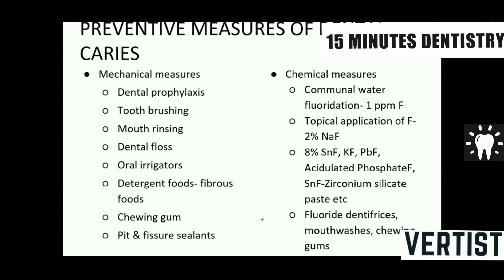Dental caries can be prevented through mechanical, chemical, and nutritional measures. Mechanical measures include regular dental prophylaxis, pit and fissure sealants, proper toothbrushing, rinsing, and flossing. Chemical measures include communal water fluoridation — the most important — and in the dental office, topical fluoride application using sodium fluoride, stannous fluoride, or acid-related phosphate fluoride, or advising patients to use fluoridated dentifrices.